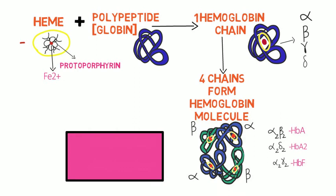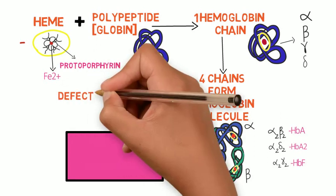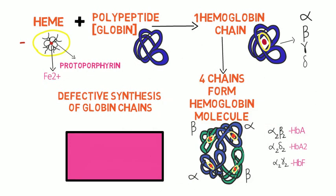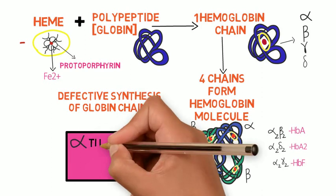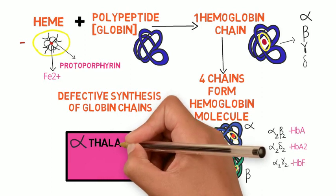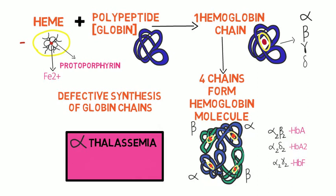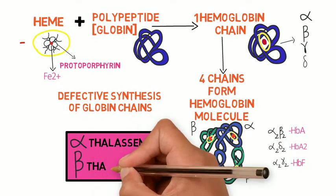When there is defective globin synthesis, thalassemia results. Decreased or absent synthesis of alpha chains causes alpha thalassemia, and decreased or absent synthesis of beta chains causes beta thalassemia.